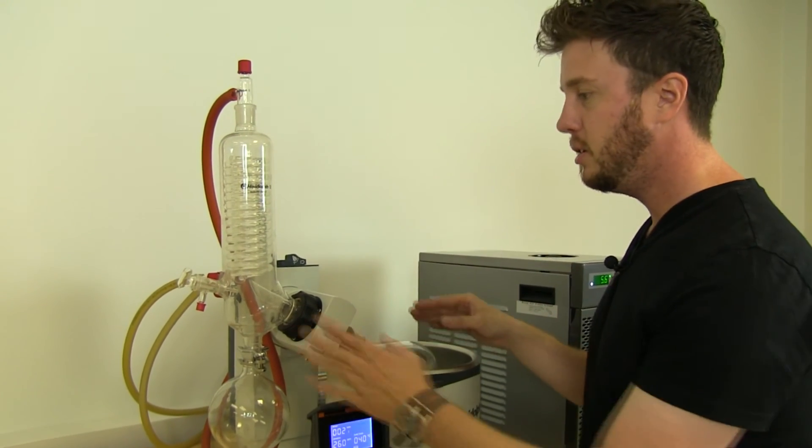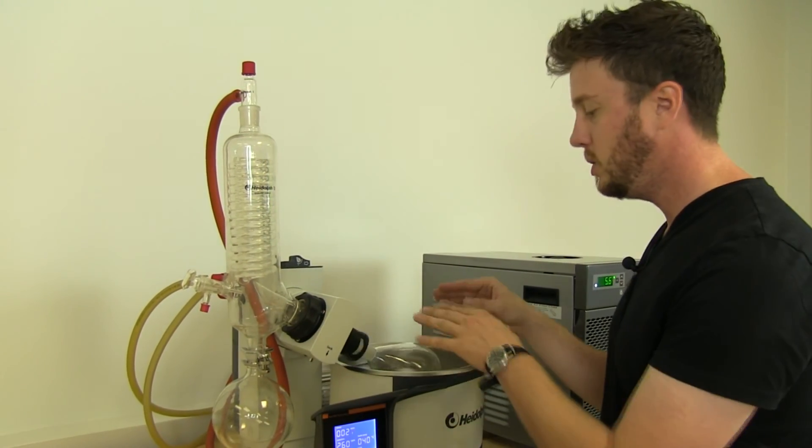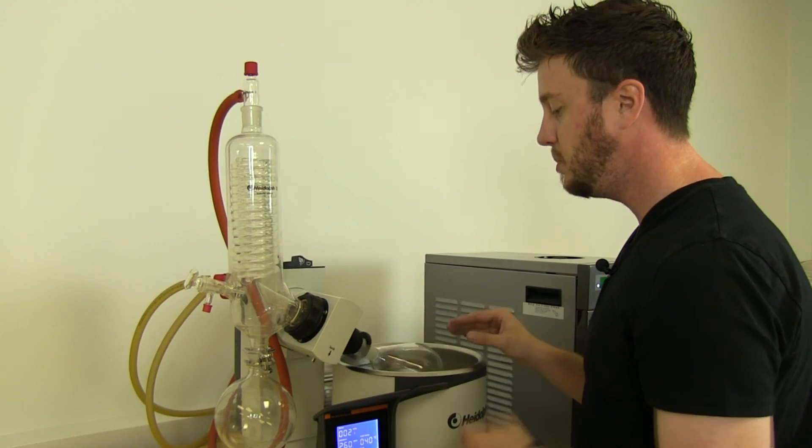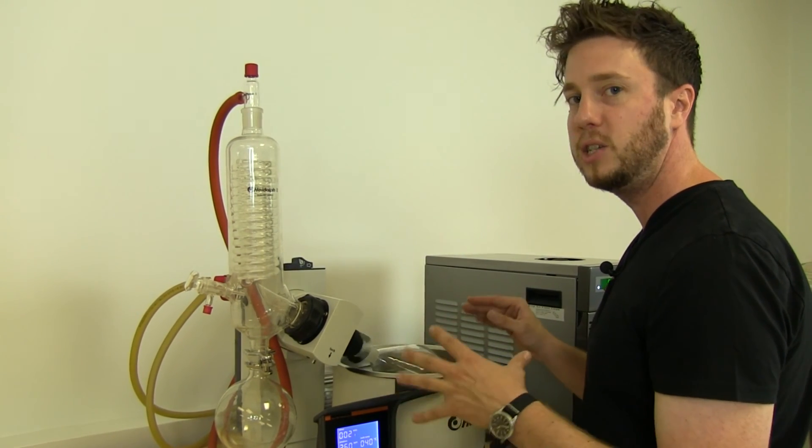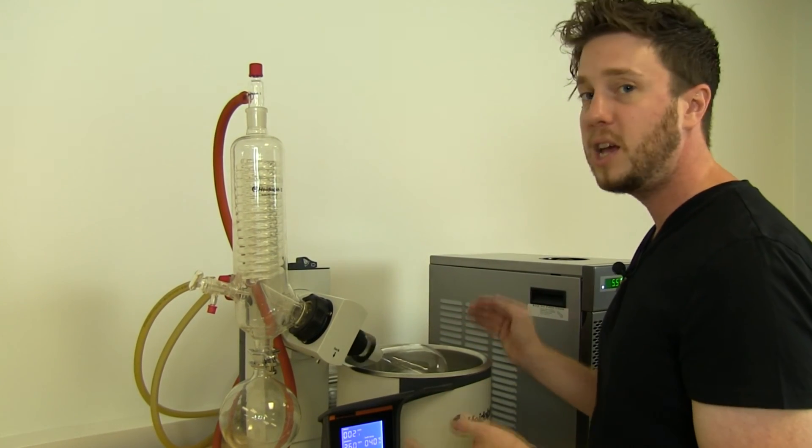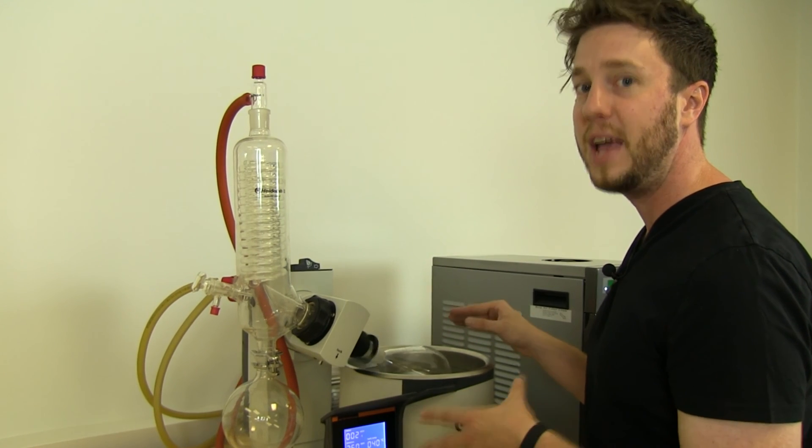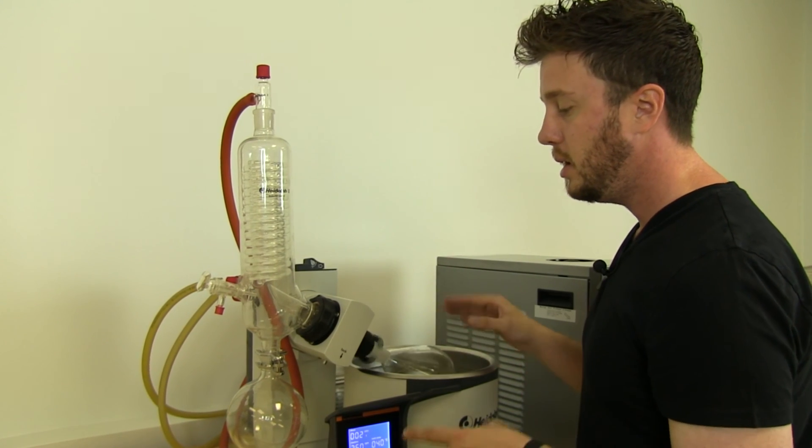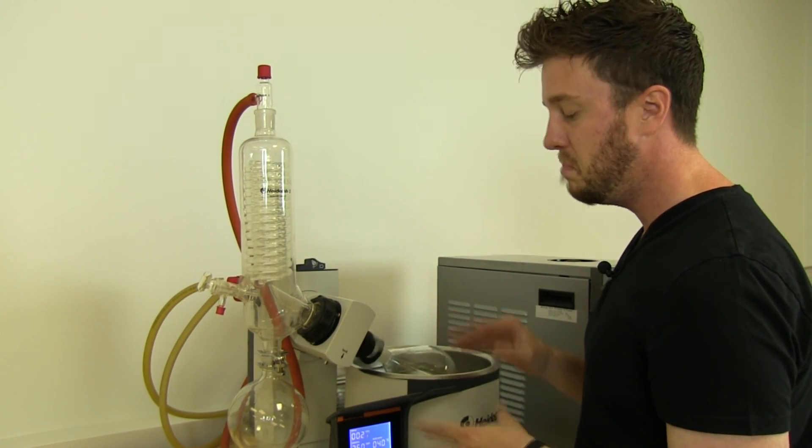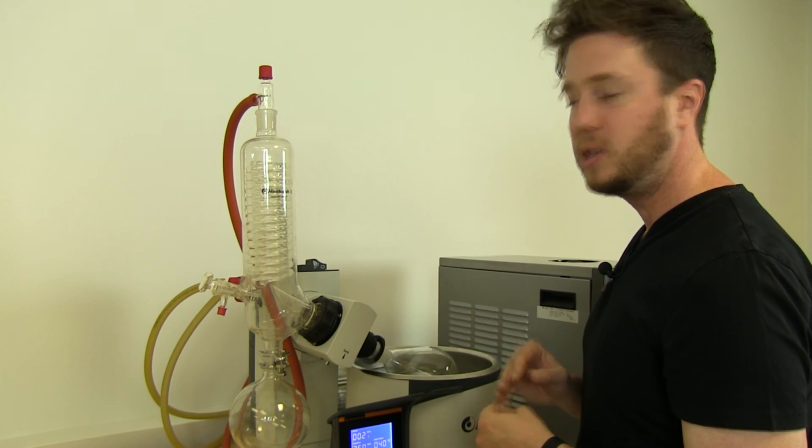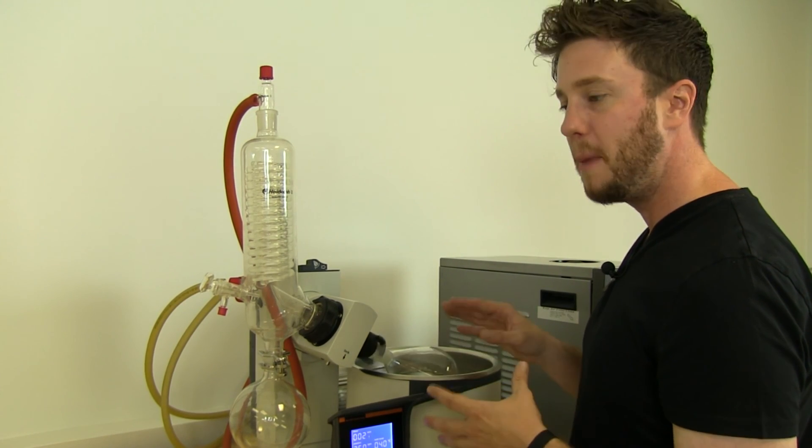But if you lower your temperature, lower your vacuum pressure, you can slow this process down. Some chefs prefer to have a nice gentle distillation that can take upwards of six, seven, eight hours. Most distillations, however, two to three hours is typical for about a liter.